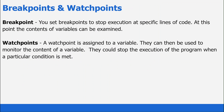Now moving on to breakpoints and watchpoints. Breakpoints are set to stop the execution on a specific line of code, and at that point the contents of that variable can be examined. A watchpoint is assigned to a specific variable and can be used to monitor the content of that variable. Watchpoints can also stop the execution of a program when a particular condition is met.